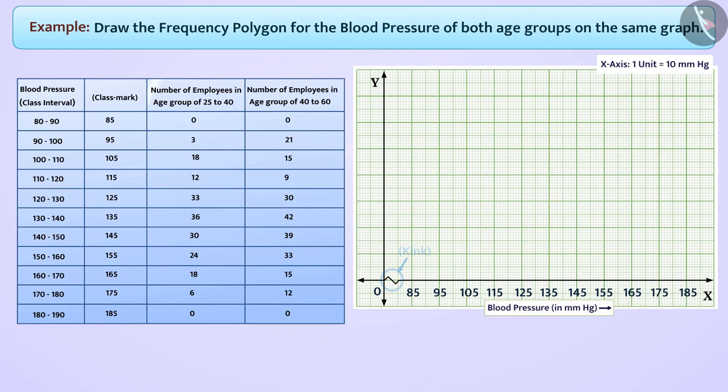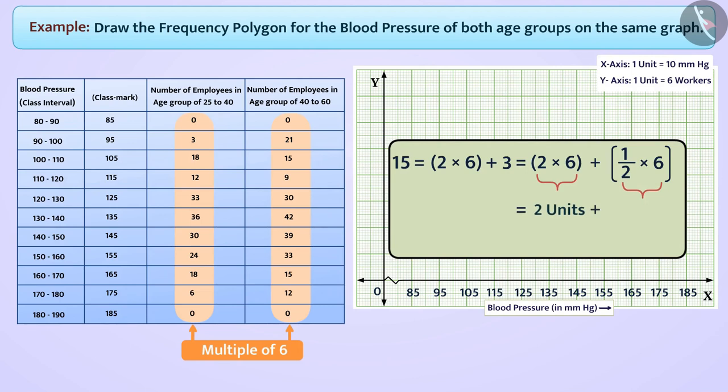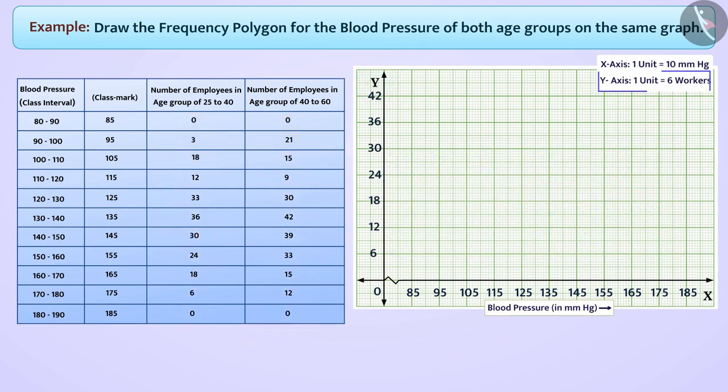If we observe the number of employees in age group 25 to 40 and age group 40 to 60, then here to represent the frequency of class intervals, we will take 1 unit is equal to 6 workers, because many numbers are multiple of 6 and other numbers can also be easily represented by this scale. Like 15 can be represented as 2 and a half units. Therefore, on the y-axis, we will take scale 1 unit is equal to 6 workers.